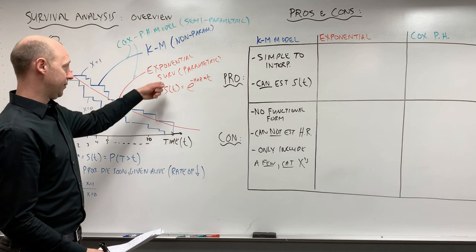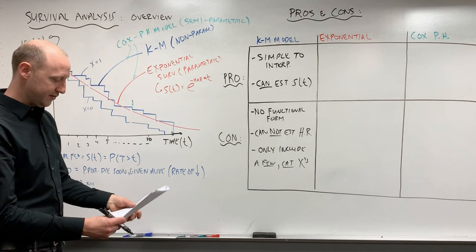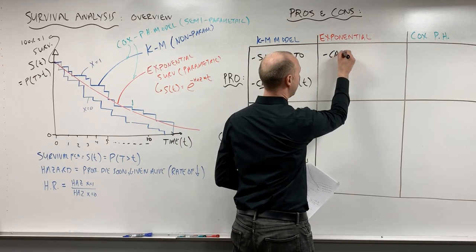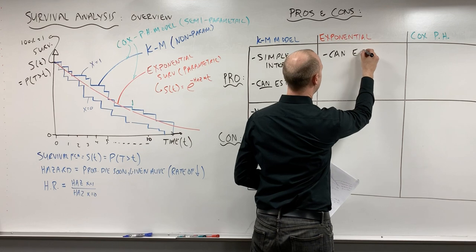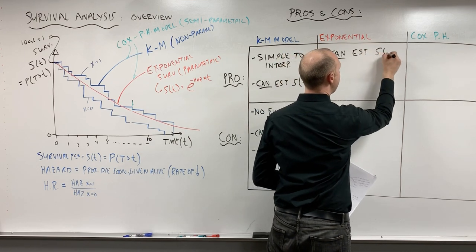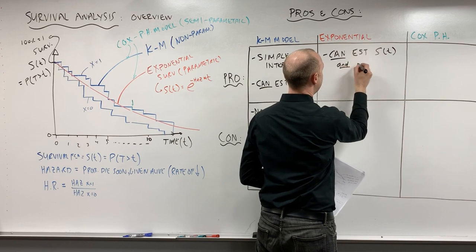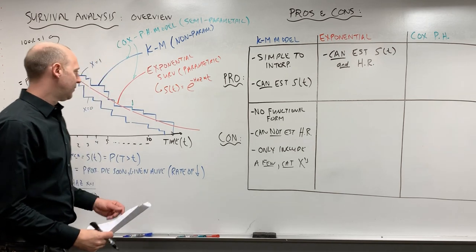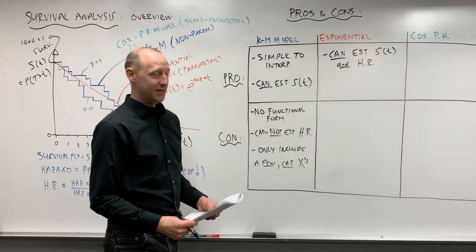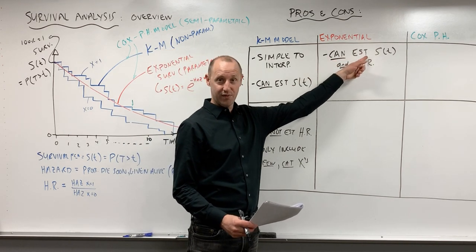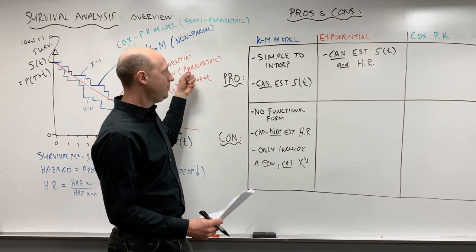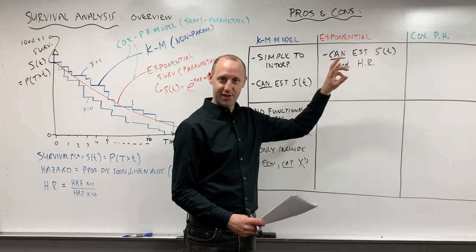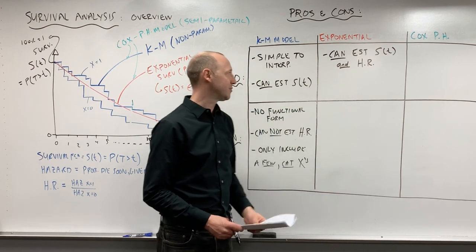The exponential, these parametrics, these nice smooth survival curves that we can fit. One of the nice things here is that we can estimate the survival function and the hazard ratio. So we can get pretty much everything that we want. If we want to answer questions about how long someone's going to survive, we can use the exponential model or any parametric model. If we want to compare hazards of two groups, treatment A versus treatment B, or exposed versus unexposed, we can do that.